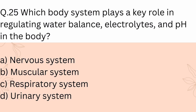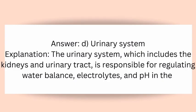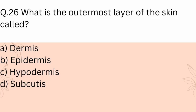Question 25: Which body system plays a key role in regulating water balance, electrolytes, and filtration in the body? A) Nervous system, B) Muscular system, C) Respiratory system, D) Urinary system. Answer: D) Urinary system. Explanation: The urinary system, which includes the kidneys and urinary tract, is responsible for regulating water balance, electrolytes, and filtration in the body.